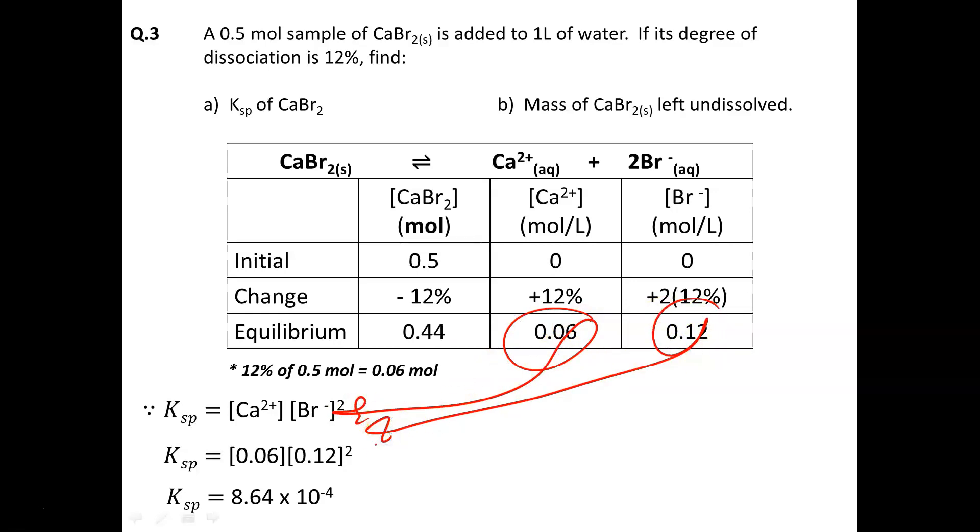Notice how the 0.44 is ignored because it's a solid. Don't forget the coefficient of 2 must be factored in as an exponent. From there, just solve, and we get a Ksp value of 8.64 times 10 to the power of negative 4, a super small number. That indicates the denominator is bigger, which is the undissolved component, telling us that calcium bromide doesn't dissolve very well.